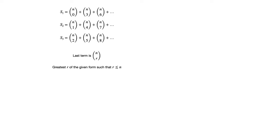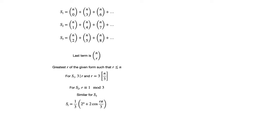For instance, in the case of S1, each r is a multiple of 3 and so the last term will have an r value that is the largest multiple of 3 that is less than or equal to n. Similarly, in S2, each r value is 1 more than a multiple of 3, and we stop at the largest such r that does not exceed n. The same is true for S3. The object of this video is to show that SI equals a third of 2 to the power n plus 2 cosine(rπ/3), where r equals n for i=1, r equals n−2 for i=2, and r equals n+2 for i=3.